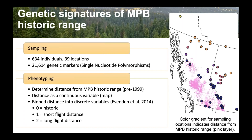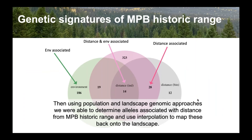We used population and landscape genomic approaches to analyze these SNPs across all individuals and sampling locations. We determined that there are definitely alleles associated with distance from the mountain pine beetle historic range. What I'm showing in this Venn diagram is a cross-validated result from separating out environmentally associated loci, and individual and binned analyses, to get the best set of loci. We ended up with 28 cross-validated loci in total associated with the distance phenotype.